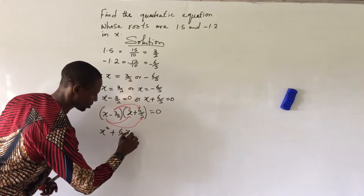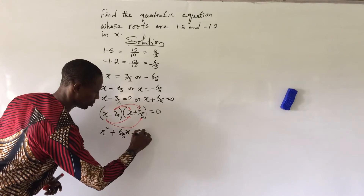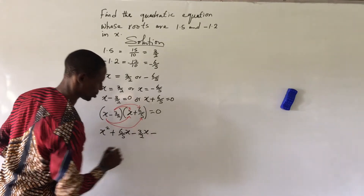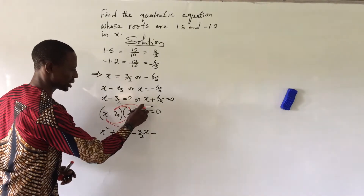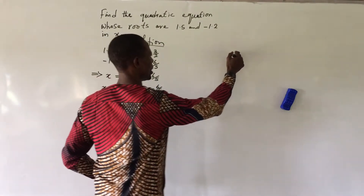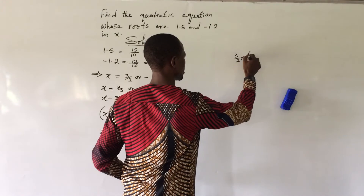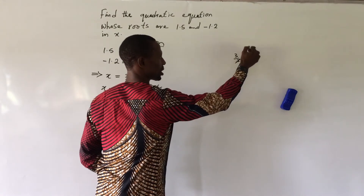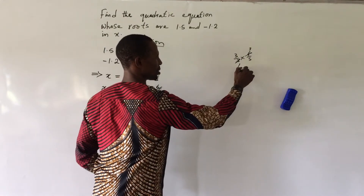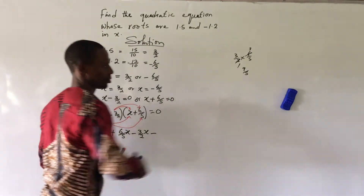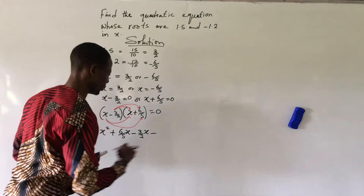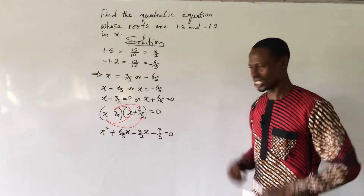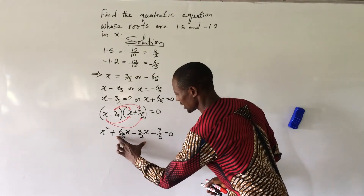Then minus 3 over 2 times 6 over 5: we cancel the 2 into 6 to get 3, leaving 3 times 3 which gives 9 over 5. So the constant term on the other side is minus 9 over 5, and the full expansion equals zero.